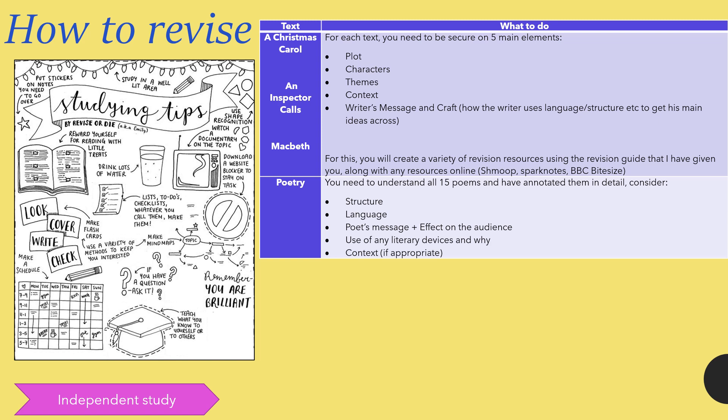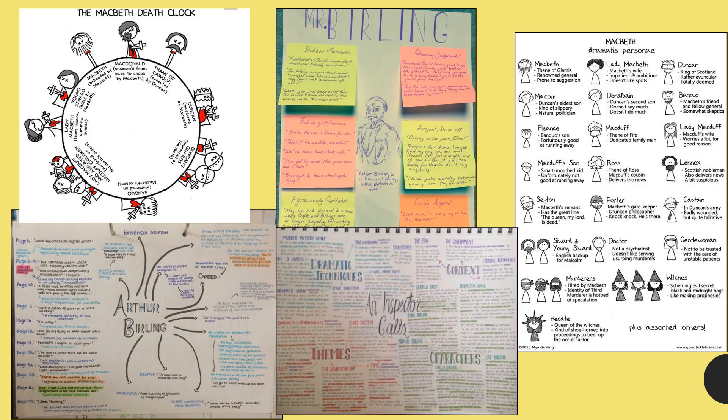Ways that students can revise: the main key tip is to timetable your revision carefully, give yourself time off, and make sure you're taking lots of breaks. On the left are key tips for study, and on the right are tips that students can use to revise for literature — thinking about plot, characters, themes, context, writer's message, and writer's craft. For poetry, they can consider the poet's message and use of devices. Mind mapping in English is a really good way to dump all that knowledge onto the page to see what they know without looking at texts or revision guides.